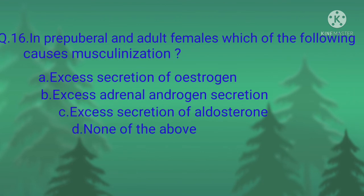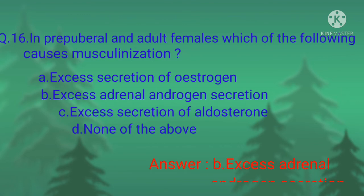Question number sixteen: in pre-pubertal and adult females, which of the following causes masculinization? Option A, excess secretion of estrogen; option B, excess adrenal androgen secretion; option C, excess secretion of aldosterone; option D, none of the above. The correct option is option B, excess adrenal androgen secretion.